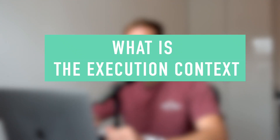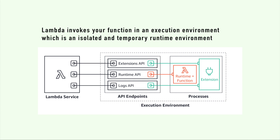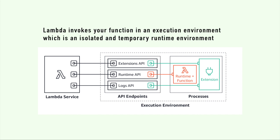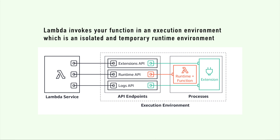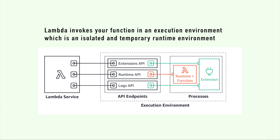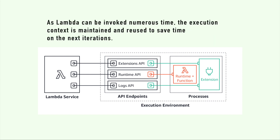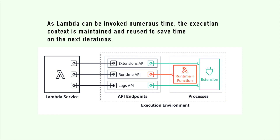What is the execution context of a Lambda function? The Lambda service invokes your function in an execution environment, which is an isolated runtime environment. The execution context is a temporary runtime environment that initializes any external dependencies of your Lambda code. As your Lambda function can be invoked numerous times and scales automatically, the execution context is maintained for some time in anticipation of another invocation, allowing the function to reuse the context and save time.